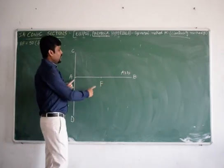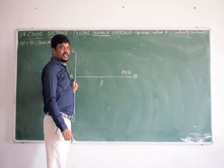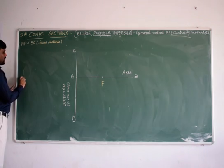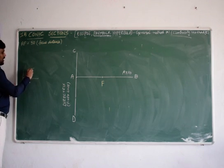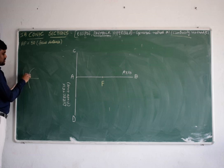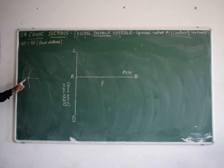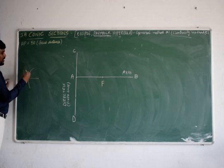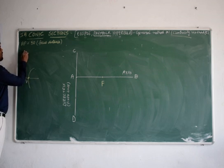Before going to locate vertex, let us define what exactly a vertex is. For example I have this, any curve passing through axis and touching a point on the axis is nothing but vertex. The point which is touching the axis is termed as vertex. Now how to locate the vertex for a parabola.